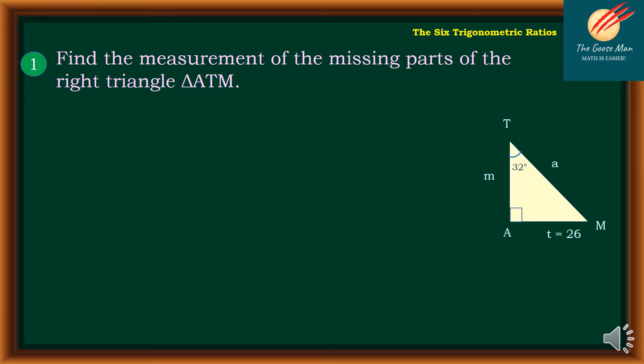So our exercise, let's consider the triangle on the right side. We have triangle ATM, and angle T is equal to 32 degrees, and side T is equal to 26. So T equals 26 is one of the legs, and measure of angle T equals 32 is one of the acute angles.